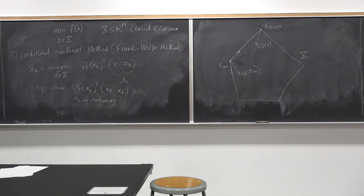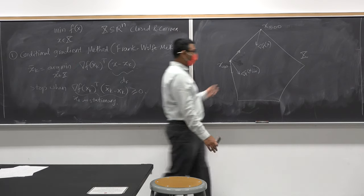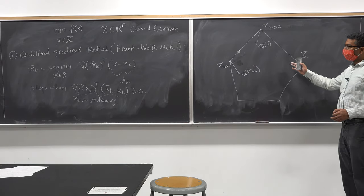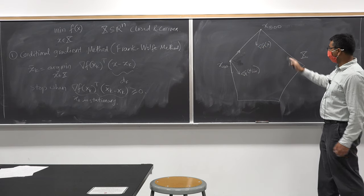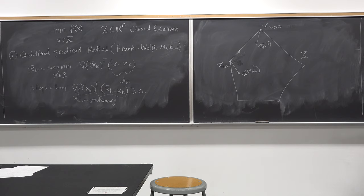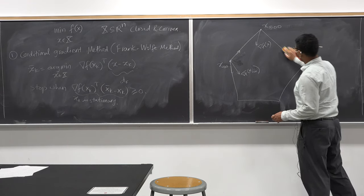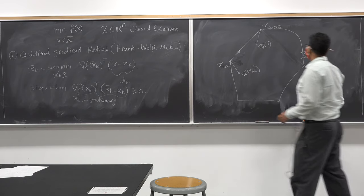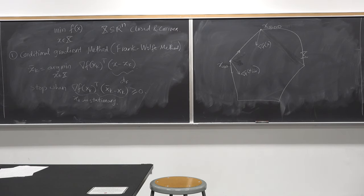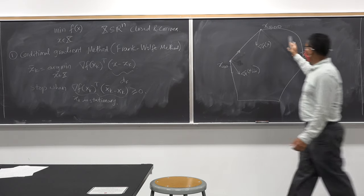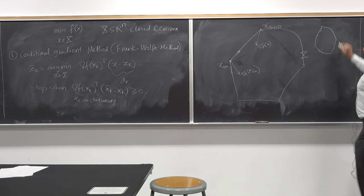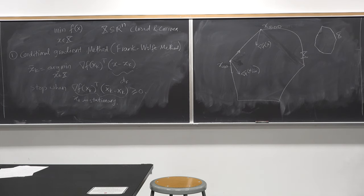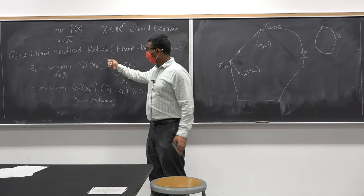There is one problem with the conditional gradient method. When does this method work very well? When you have an extremely large number of constraints, or when your surface has some curvature. These surfaces with just a few straight lines don't have curvature. But if you add curvature to the convex set, you want to run the conditional gradient method when you have curvature like this, or when you have too many constraints that make it look like a curved surface. In those conditions, the conditional gradient method does very well.